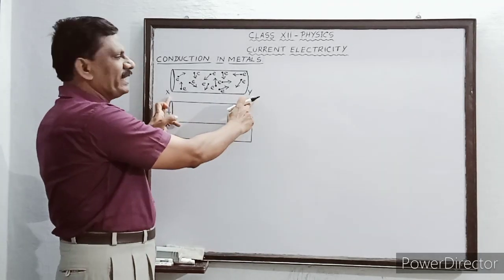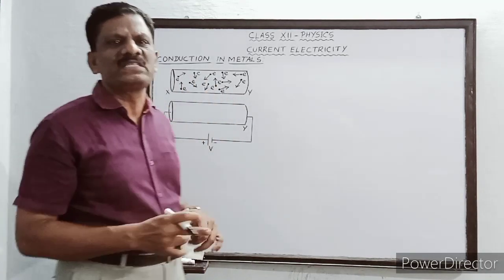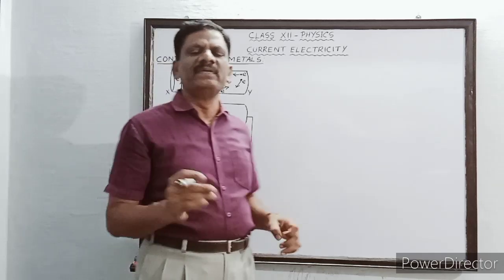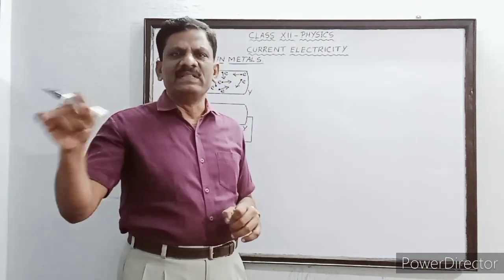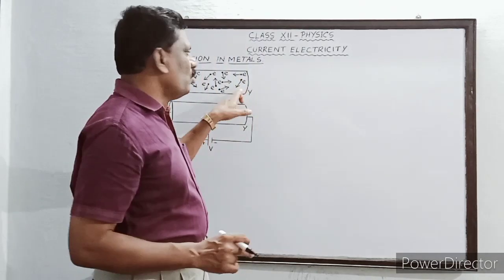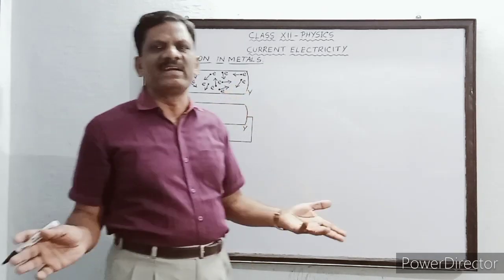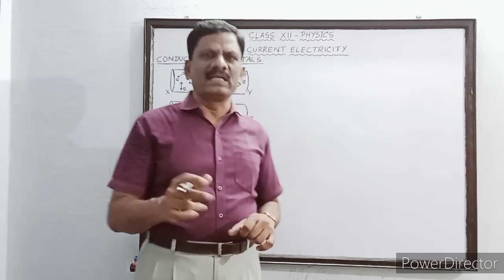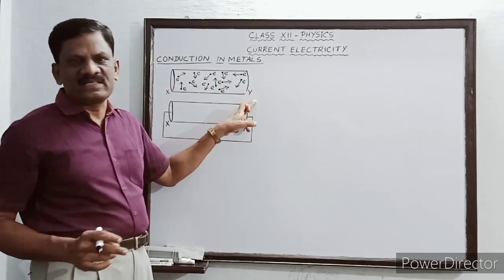This is a metallic conductor XY, and inside the conductor these free electrons — the outermost electrons — are moving in different directions. Whenever these negatively charged electrons move from one place to another within the same conductor, they constitute an electric current. But they are moving in random directions, so the currents produced by all these electrons are in different directions. If you add the currents produced by all these electrons, the net current will be equal to zero, and there is no net current flowing through conductor XY.